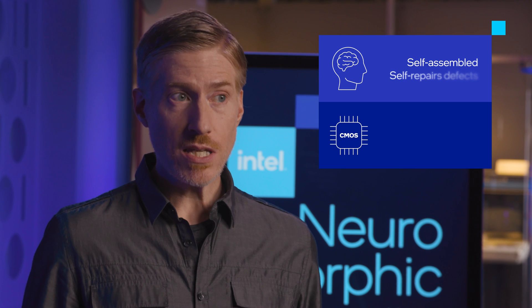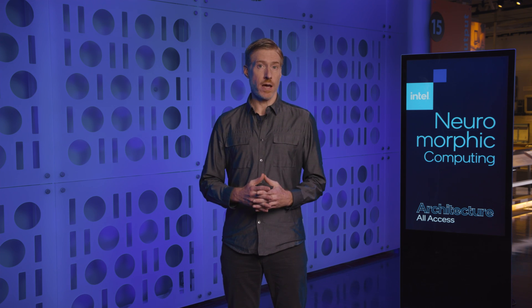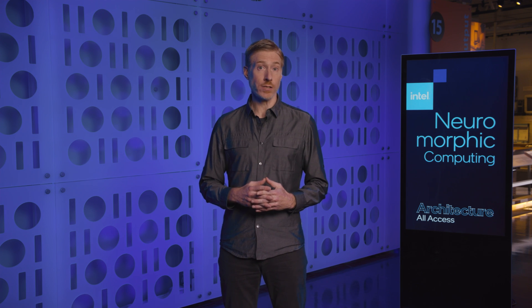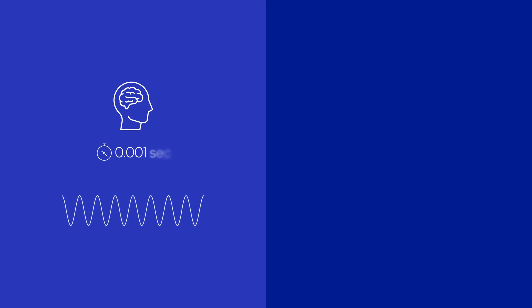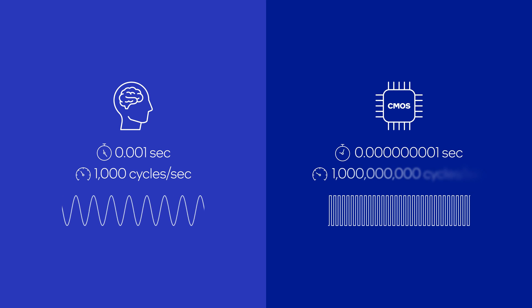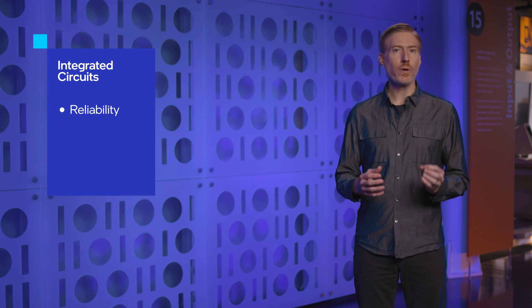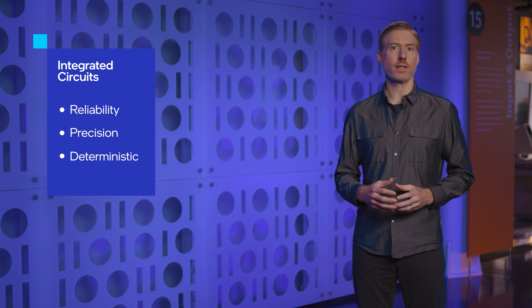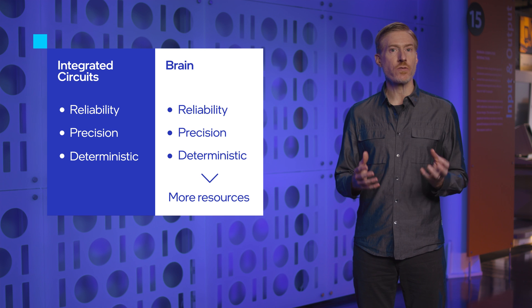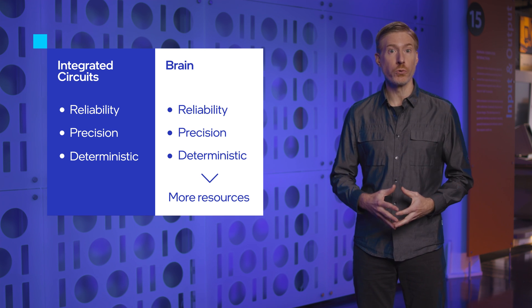On the other hand, today's CMOS semiconductor manufacturing technology does give us some important advantages. In speed, for example, we can construct extraordinarily fast circuits compared to biological neural circuits. While biology operates at milliseconds and kilohertz scales, our CMOS circuits operate at nanoseconds and gigahertz. And we can construct reliable circuits that operate precisely and deterministically, whereas in the brain, precision and reliability come at the expense of redundancy or more neural resources.